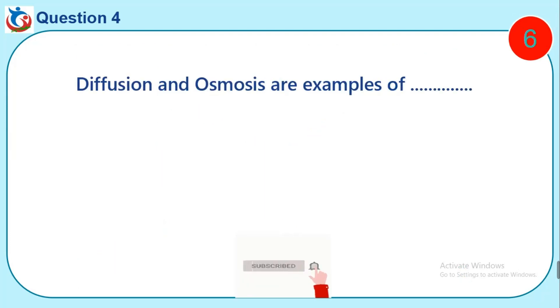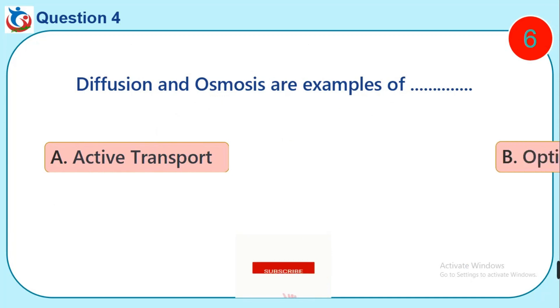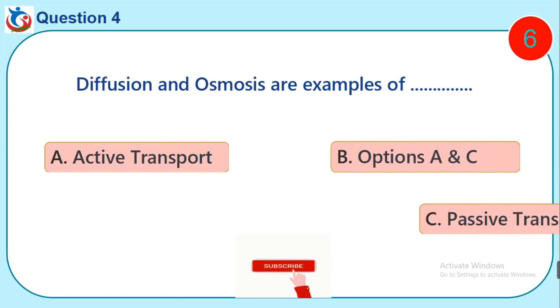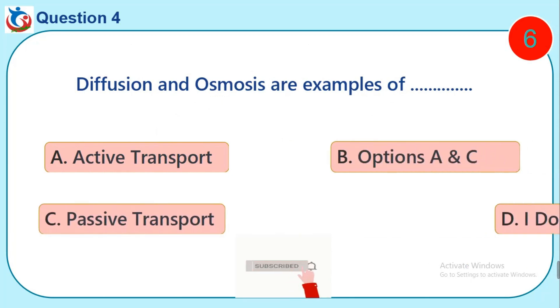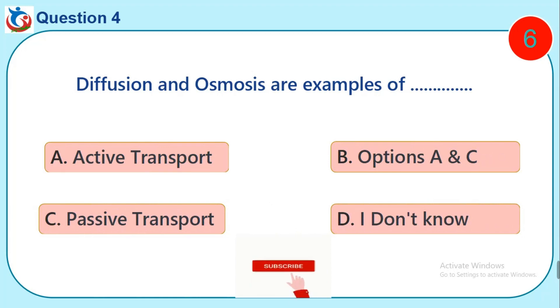Question 4. Diffusion and osmosis are examples of dash. A. Active transport. B. Options A and C. C. Passive transport. D. I don't know.